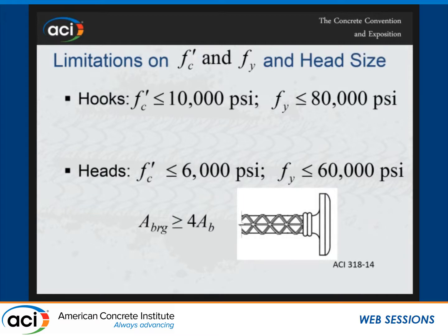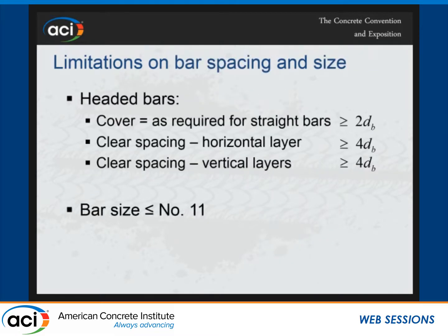There are also limitations. The limitation of usable strength in the equation for hooks is 10,000 PSI, and you can go to 80,000 PSI for the steel yield strength. For heads, because of the limited data, 6,000 PSI is the maximum you can use in the equation, and maximum of grade 60 steel. The area of the headed bar, if you have heads, must be at least four times the area of the bar. There are limitations on bar spacing for headed bars. Regular cover requirements apply; in addition, you must have at least two bar diameters on the outside as part of your cover. In the horizontal and vertical direction, you have to have clear spacing of at least four bar diameters. And you're limited for headed bars to number 11, just because there is no data out there.